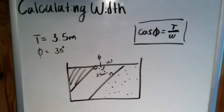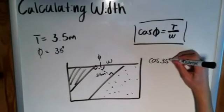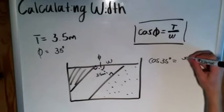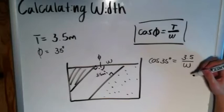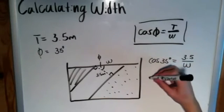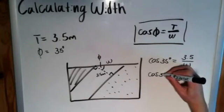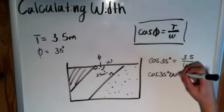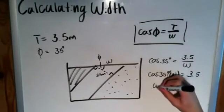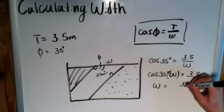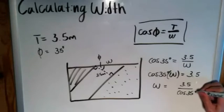So then we just plug that into the equation. We can say that the cosine of 35 degrees is equal to 3.5 divided by the width. And then the cosine of 35 degrees times W is equal to 3.5. So then W is equal to 3.5 divided by the cosine of 35 degrees.